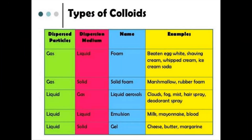The first type is solid dispersed in solid, known as a solid sol. Solid dispersed in liquid is known as a sol. Solid dispersed in gas is known as an aerosol. Liquid dispersed in solid is known as a gel. Liquid dispersed in liquid is known as an emulsion. Liquid dispersed in gas is also known as an aerosol. Gas dispersed in solid is known as a solid foam. Gas dispersed in liquid is known as foam. Relevant examples are given in the textbook.